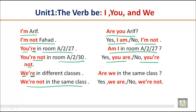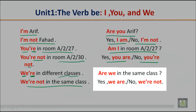Similarly, for 'We are in different classes,' the question becomes: 'Are we in the same class?' The answers are: 'Yes, we are' or 'No, we are not.' Let's do some more practice about verb be in simple present.